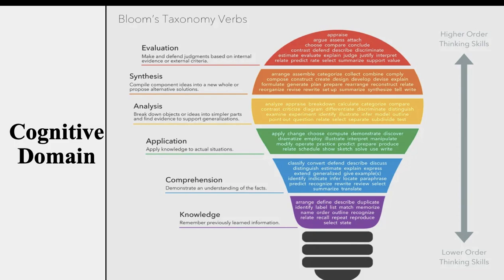Before going ahead, it is good to get a review and recap of what we have done in the last discussion. We discussed Bloom's taxonomy, which has three domains: cognitive domain, affective domain, and psychomotor domain. For now, we are discussing the cognitive domain. Cognition means thinking skills — any kind of intellectual thinking skills that require reasoning, and ultimately, on the basis of thinking and reasoning, we come to decision-making. According to Bloom's taxonomy, the cognitive domain has six different levels.